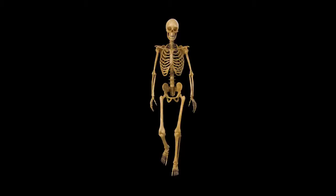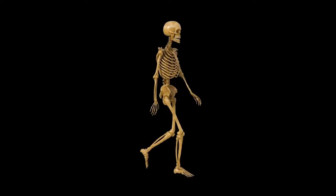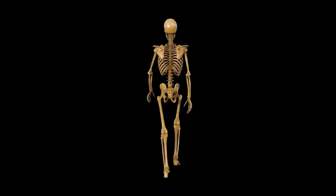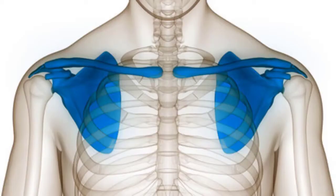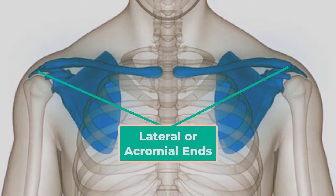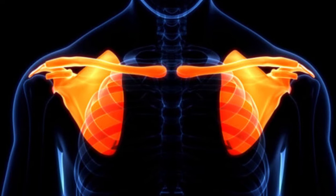This joint allows considerable mobility, enabling the clavicle and scapula to move upward and downward and anteriorly and posteriorly during shoulder movements. The lateral or acromial end of the clavicle articulates with the acromion process of the scapula. This is the portion of the scapula that forms the bony tip of the shoulder.